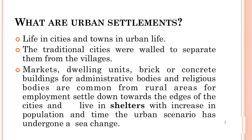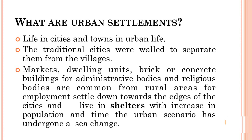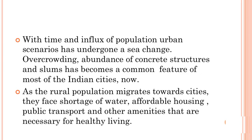Life in cities and towns is urban life. The traditional cities evolved separately from villages, with markets, dwelling units, brick or concrete buildings for administrative and religious bodies being common features distinct from rural areas. People coming in search of employment settled towards the edges of cities and lived in shelters. With the increase in population over time, the urban scenario has undergone a sea change. People coming from rural areas in search of job opportunities settle down in shanties in the periphery of cities. Shanties are small houses usually made from pieces of wood, metal or cardboard in which poor people live, especially on the edges of the city. Overcrowding, abundance of concrete structures and slums have become a common feature of most Indian cities.